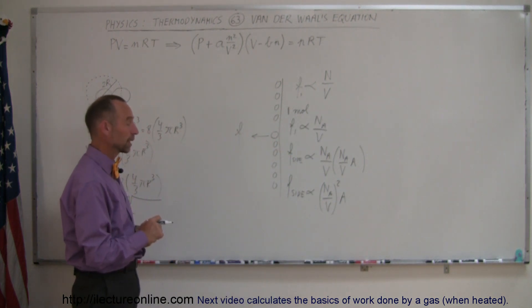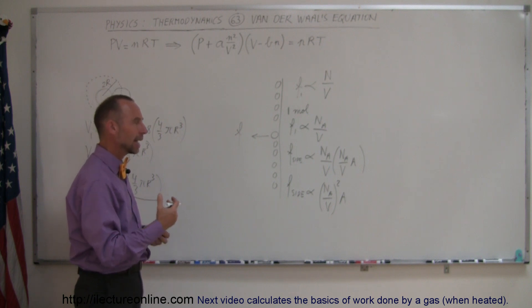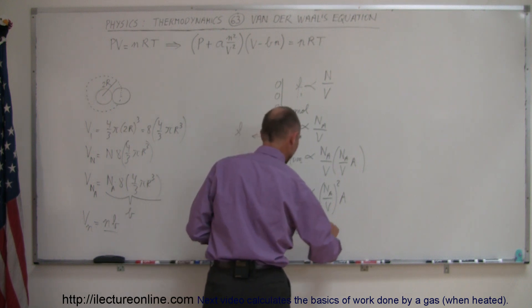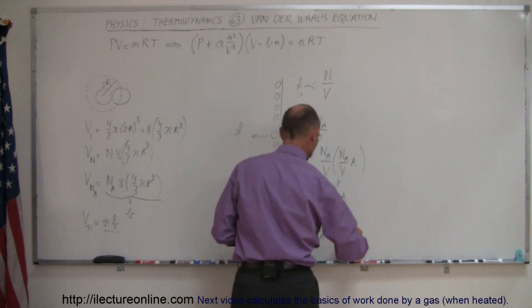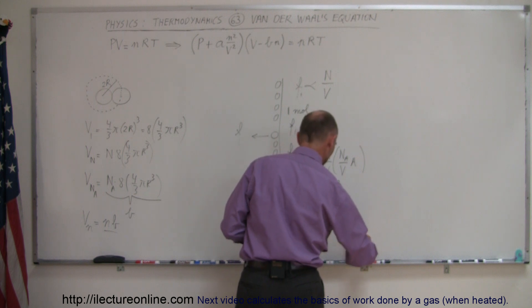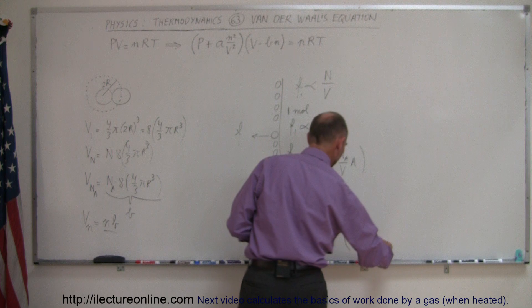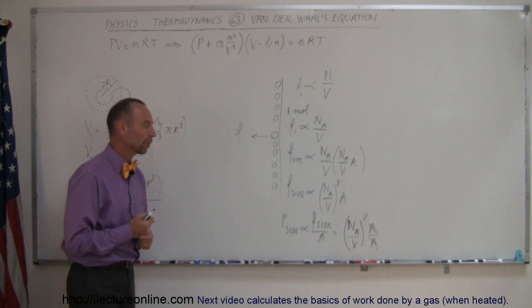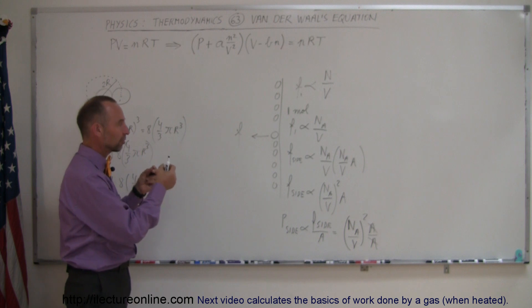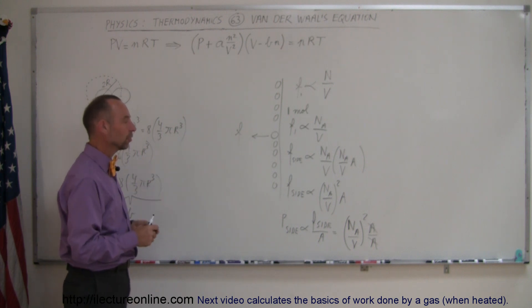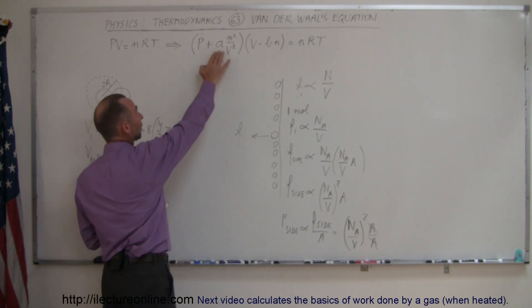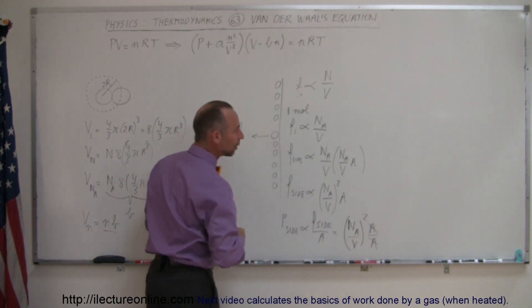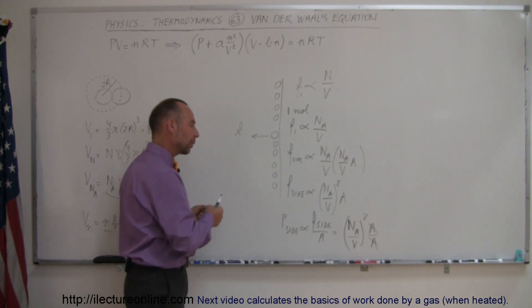Since pressure equals force divided by area, the pressure against the side is proportional to (N_A / V²) times A divided by A — the area cancels out, giving N_A over V squared. The actual pressure depends on the interaction between the specific molecules, so we introduce variable A to represent the force between individual molecules depending on what gas we're dealing with.